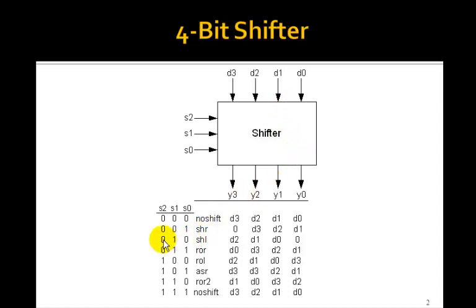If we make S a 2, we'll shift left. That is, d2 goes to y3, d1 goes to y2, d0 goes to y1, and we shift a 0 in from the right.